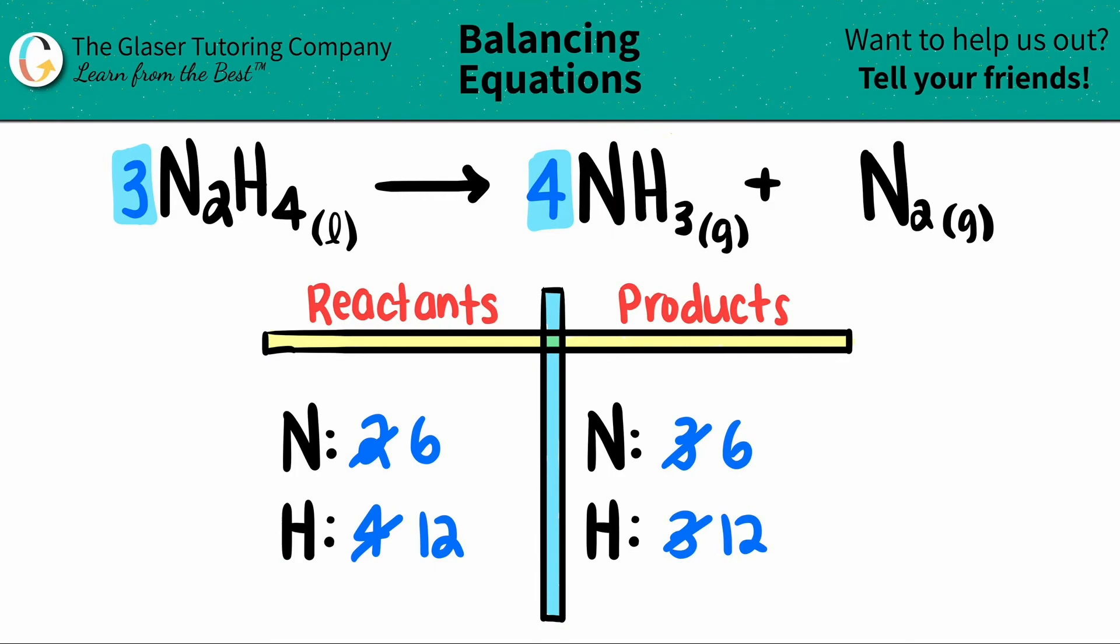So the full balanced equation would be three N2H4 will produce four NH3s plus one N2. And that's it.